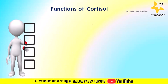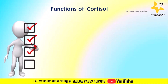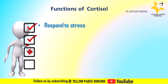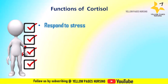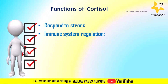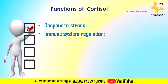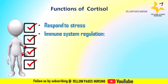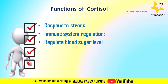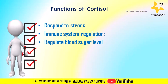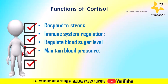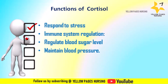Here are the functions of cortisol. First, responding to stress: cortisol is released in response to stress, helping the body cope with and adapt to stressful situations. Next, immune system regulation: cortisol helps regulate the immune system by suppressing inflammation and immune responses. Next, regulation of blood sugar levels: cortisol plays a role in regulating blood sugar by promoting the release of glucose into the bloodstream. Cortisol also helps maintain blood pressure by influencing blood vessel constriction and dilation.